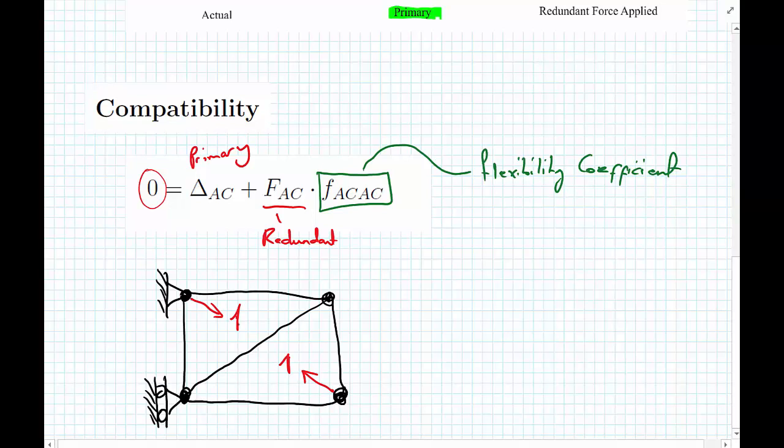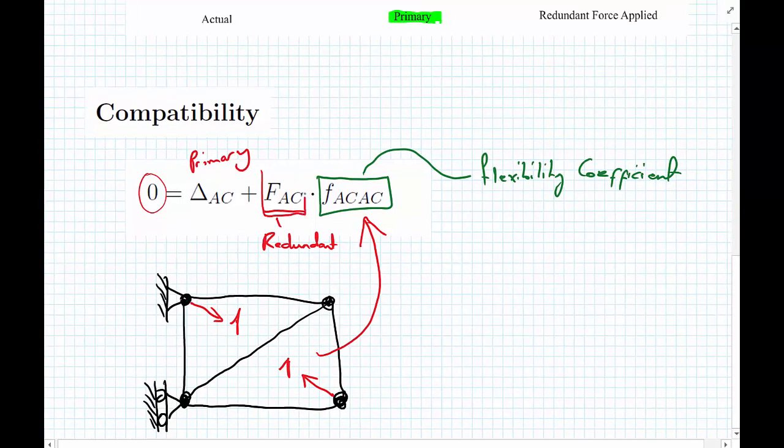What we're going to do is apply a unit load where the force F_AC would be, and then finally we use this compatibility equation to factor up the unit load. f_AC,AC we will get this flexibility coefficient and the factor by which we need to factor up the flexibility coefficient. So if this is a unit load of one but actually we need seven kilonewtons, F_AC would be seven kilonewtons to factor it up.